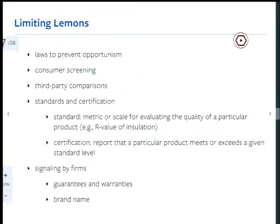So how do you limit lemons? There are laws that try to prevent this opportunistic behavior and minimize the number of low-quality cars entering the market. For example, Germany has very strict testing requirements for what kind of cars you actually get to register — you have to get a detailed technical checkup every year or two to make sure it's okay.